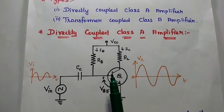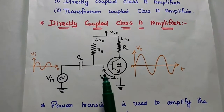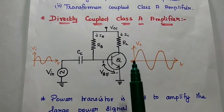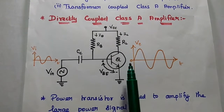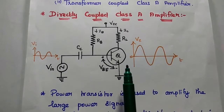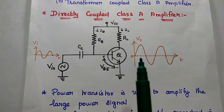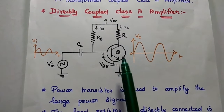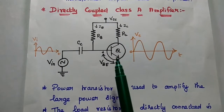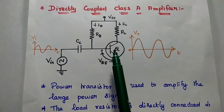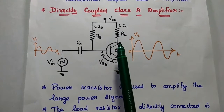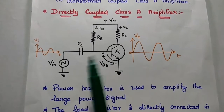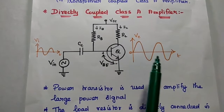This is the directly coupled Class A amplifier circuit. In this circuit we are going to use a power transistor to amplify the large power signal. That is the major difference between the power amplifier and the normal amplifier. Since the load resistance is connected directly to the collector, we call this a directly coupled Class A amplifier.